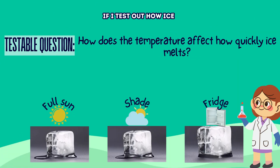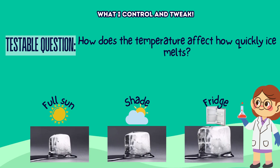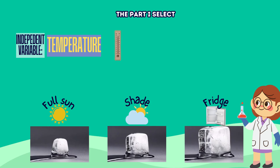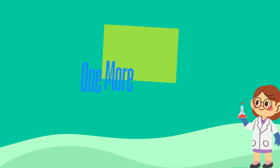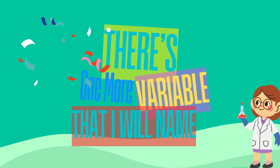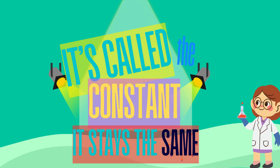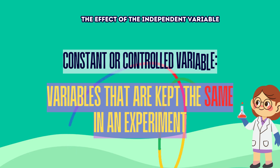If I test how ice melts in different heat, the temperature's what I control and tweak — that's independent, the part I select. Time to melt is dependent, that's what I'll check. There's one more variable that I will name: it's called the constant, it stays the same. We keep it controlled so the test is fair, so that we can observe the effect of the independent variable.